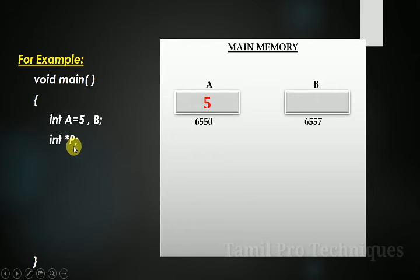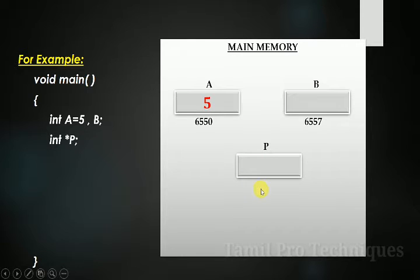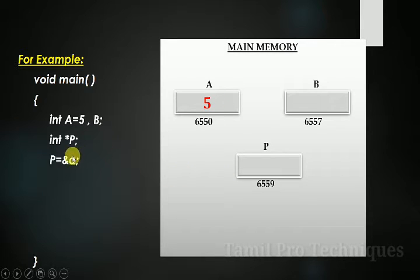We declare the pointer variable and use it. I create the pointer variable in my main memory. We have an address, and in the next statement we have a pointer variable. We have an address of A.